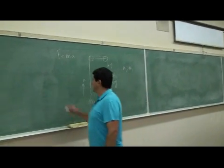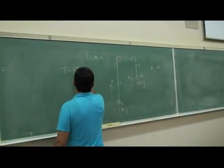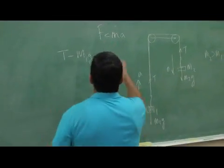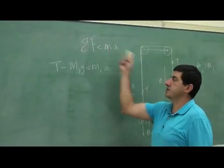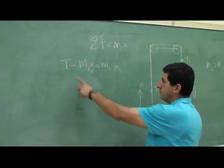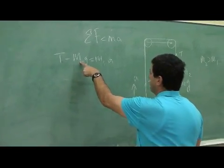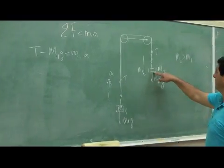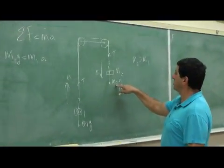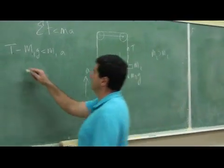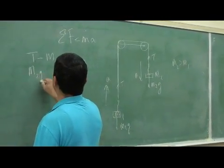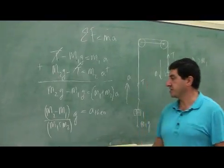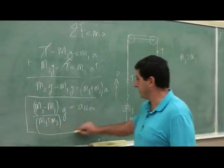We have T minus M1G equals M1A. So what we're doing is applying Newton's second law — sum of the forces equals MA. The tension in the string minus the weight of M1 equals its mass times its acceleration. For the heavier one, its weight is greater than the tension, so it's accelerating downward: M2G minus T equals M2A. This is the theoretical acceleration as given by Newton's laws.